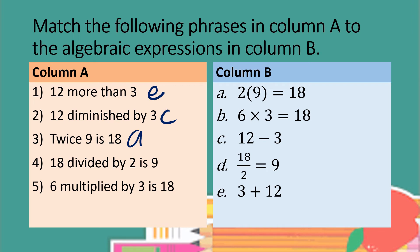Number 4. 18 divided by 2 is 9. The fraction bar is also division, so 18 over 2 equals 9, letter D. And 6 multiplied by 3 is 18, so 6 times 3 equals 18, that's B. It's important to be familiar with the other wordings used to represent the different types of operation symbols.